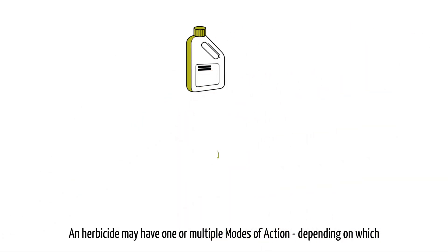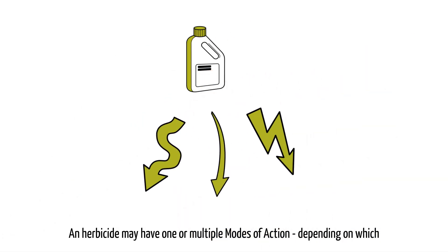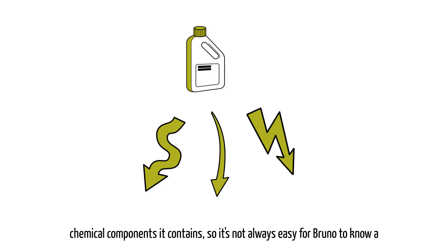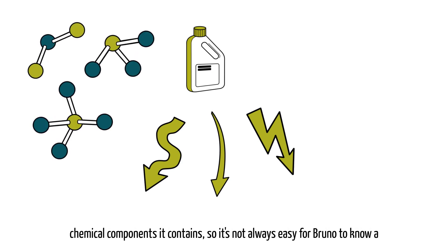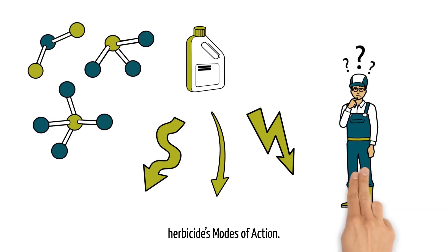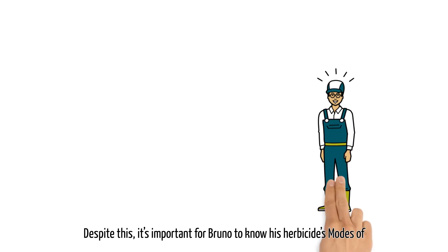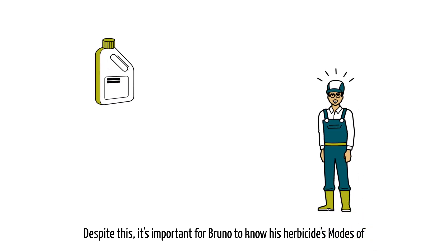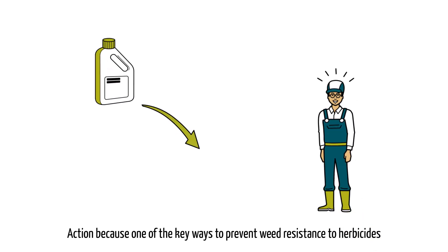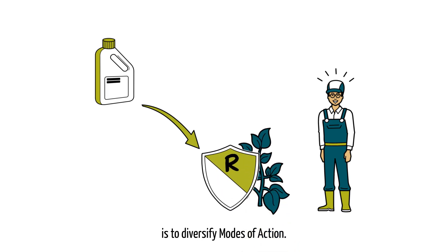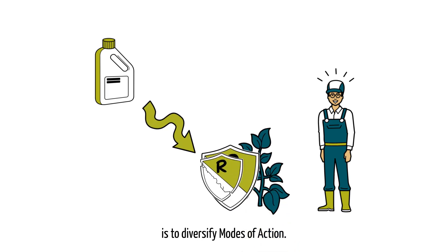A herbicide may have one or multiple modes of action depending on which chemical components it contains, so it's not always easy for Bruno to know a herbicide's modes of action. Despite this, it's important for Bruno to know his herbicide's modes of action because one of the key ways to prevent weed resistance to herbicides is to diversify modes of action.